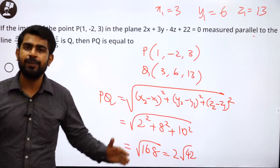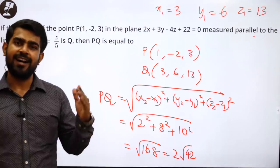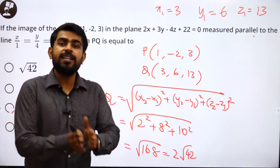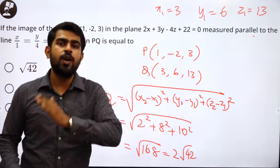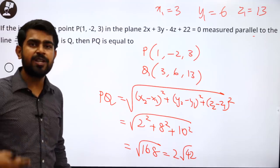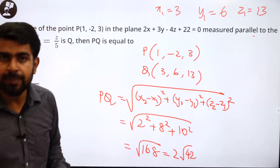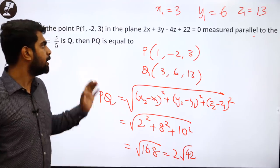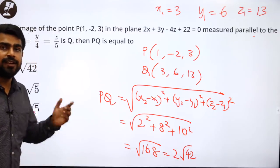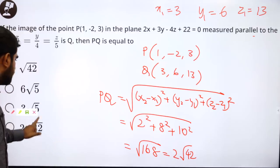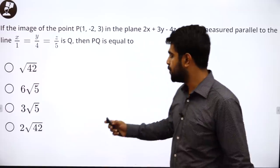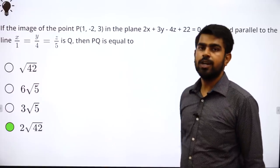This might look lengthy but it is still doable, probably in 2 minutes in an exam. The answer is option D = 2√42. Let us move forward to the next question.